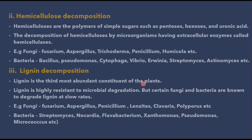The second type of decomposition is hemicellulose decomposition. Hemicelluloses are polymers of simple sugars such as pentoses, hexoses, and uronic acid. Decomposition takes place through extracellular enzymes called hemicellulases. Fungi involved include Aspergillus, Penicillium, Fusarium, Trichoderma, Humicola, and Chaetomium. Bacteria involved include Bacillus, Pseudomonas, Cytophaga, Vibrio, Erwinia, Streptomyces, and Actinomyces.